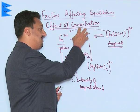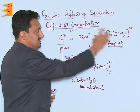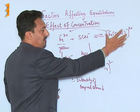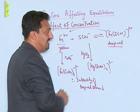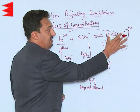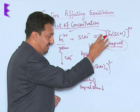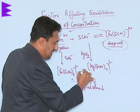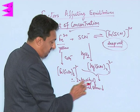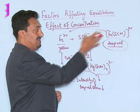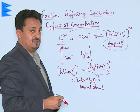Again, since a reactant is removed, the system will move backward. This complex will start dissociating into ferric and thiocyanate ions. Since the concentration of the ferric thiocyanate complex is decreasing, the intensity of the deep red color will decrease.